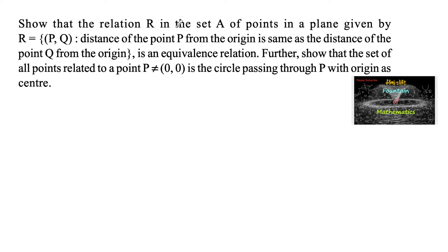Show that the relation R in the set A of points in a plane, given by R = {(p, q) : distance of point P from the origin is same as the distance of point Q from the origin}, is an equivalence relation. Further show that the set of all points related to a point which is not equal to the origin is the circle passing through the point with origin as center.